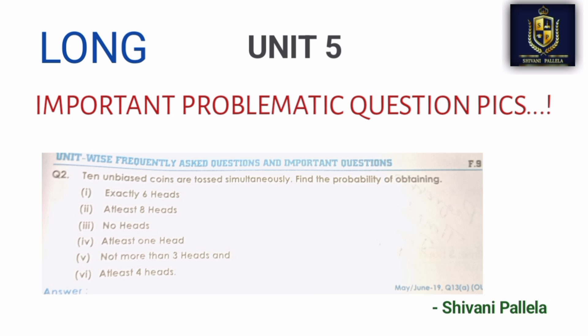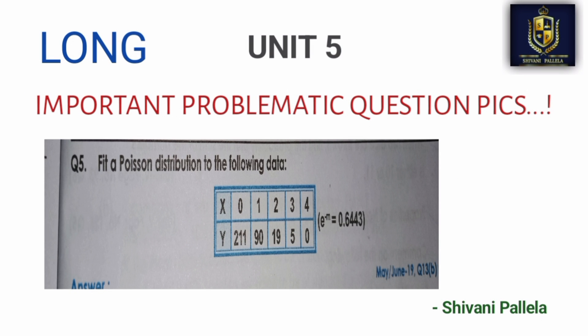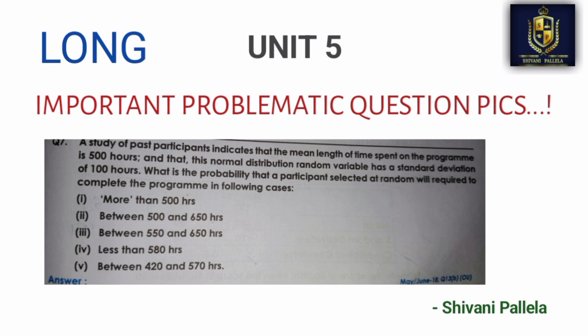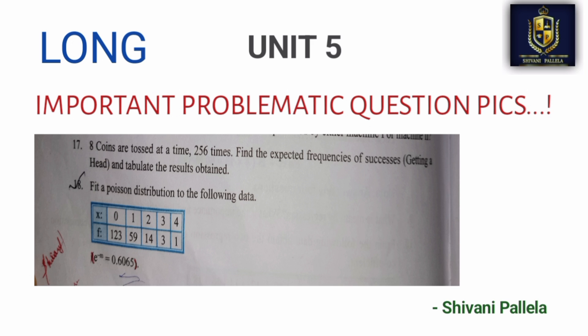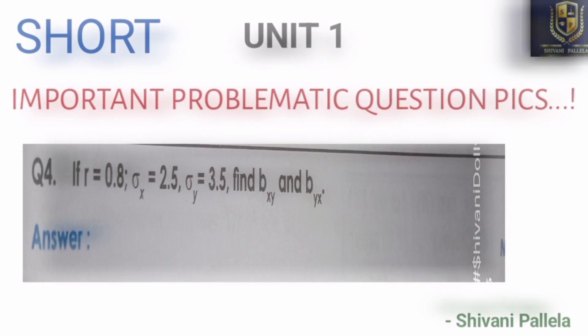In Unit 5, as I said, Poisson distribution is compulsory. If x is equal to 0, 1, 2, 3, 4 — the same question repeats every year, 4 to 5 times in 5 to 6 years of papers. Also: 5 coins are tossed 3200 times — what is the calculation of mean and standard deviation? Poisson distribution has no chance of being skipped — it is compulsory. It is easy once you practice it.